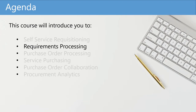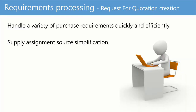The next lesson is about requirements processing. Now that we have seen how it is possible to express purchasing needs, we will see how these requirements can be processed in SAP S4HANA. Requirements processing is the possibility to handle purchase requirements quickly and efficiently by gathering them and requesting suppliers for a quotation. This leads to a simplification of the source of supply assignment.